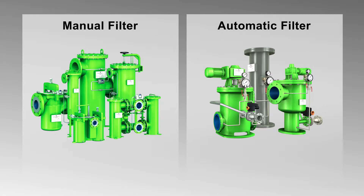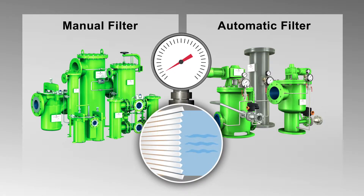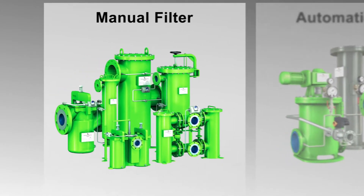Both filter types are equipped with differential pressure gauges which display the level of contamination of the filter element. Low differential pressure means a cleaner filter element and high differential pressure means a clogged filter element. In the case of the latter, now is the time to clean the filter element.